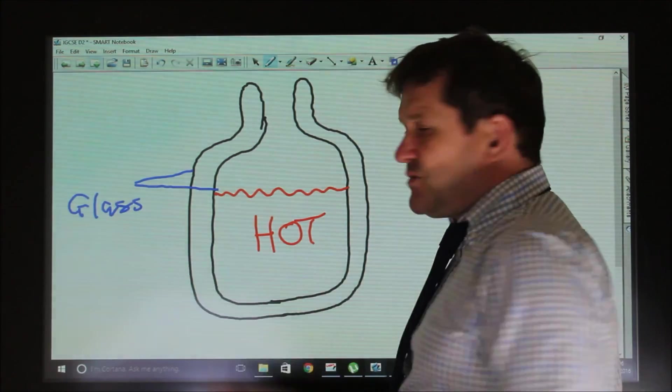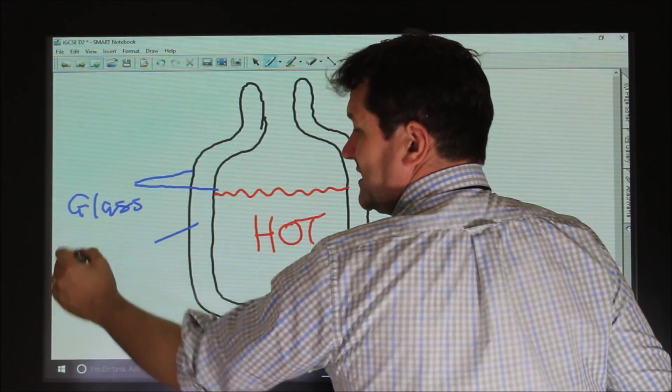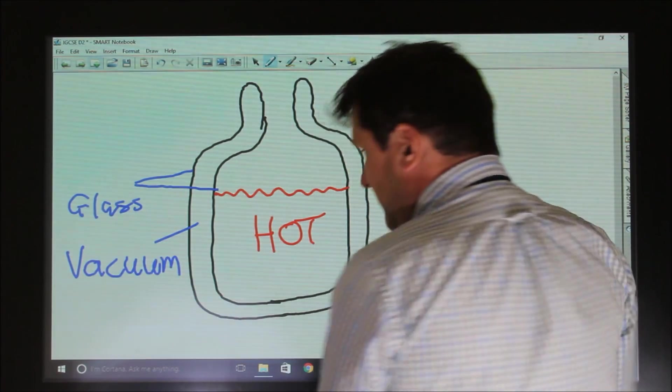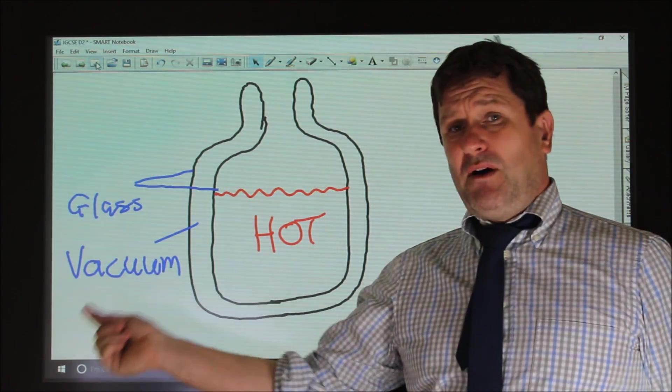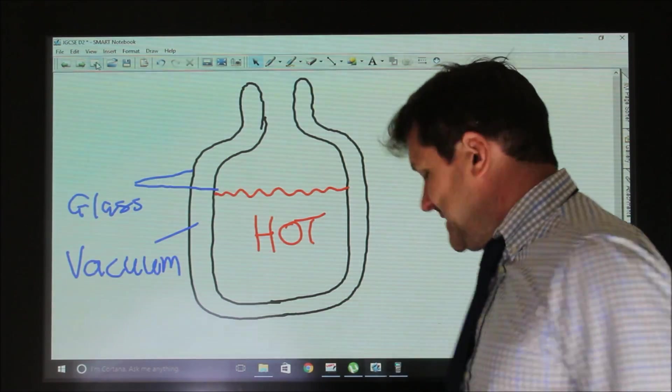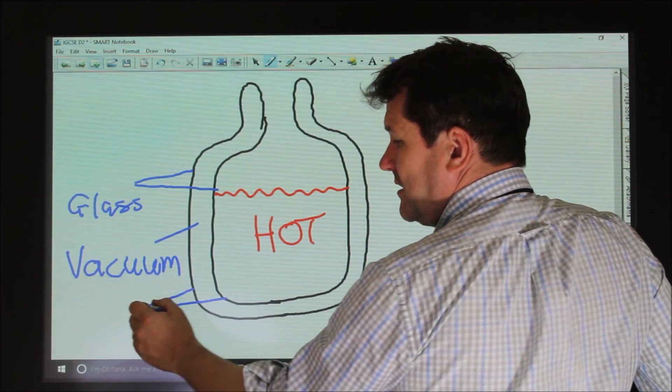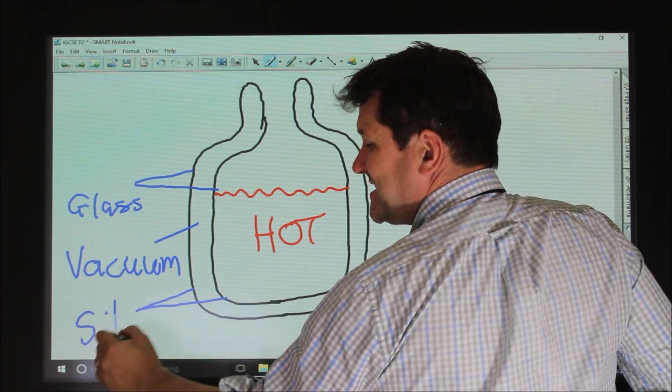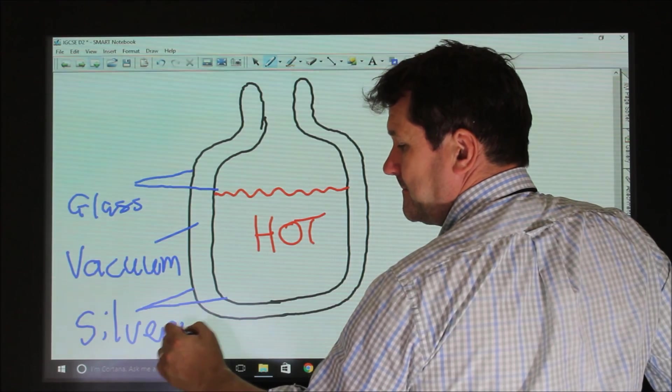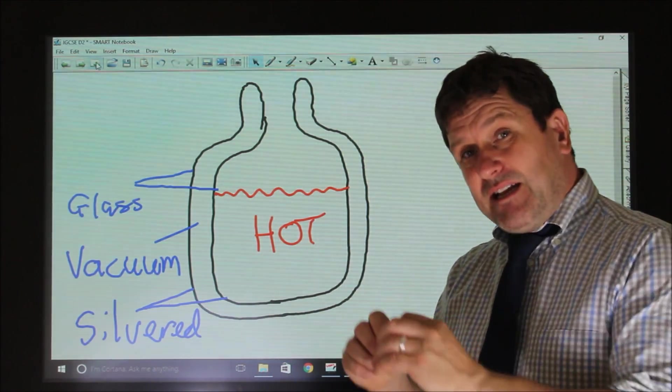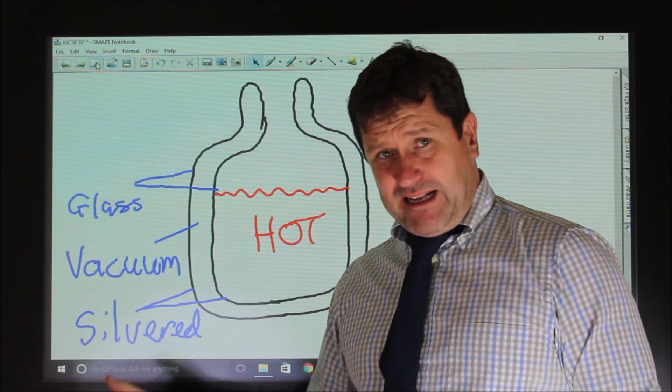In between these walls is a perfect, well, as close as they can get to perfect, a vacuum. A vacuum means that there are no air particles at all inside it. And importantly as well, the walls are what we call silvered, and this means that they're coated in a metal coating which makes them highly reflective.